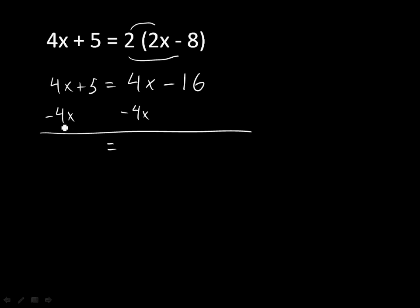As I do that, 4x minus 4x is 0, and 0 plus 5 is 5. On the right-hand side, 4x minus 4x is 0. 0 minus 16 is negative 16. At this step in the process, you should realize that you've lost your variable. Your variable has disappeared. What I advise students to do in this case is first go back and check your work. Make sure you didn't make a mistake.